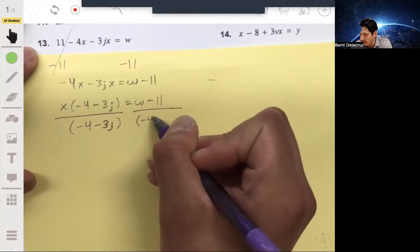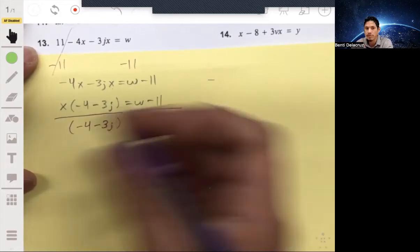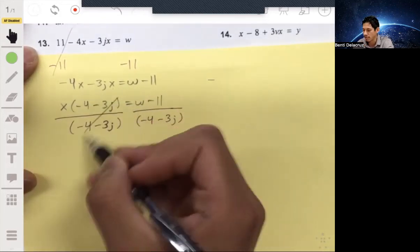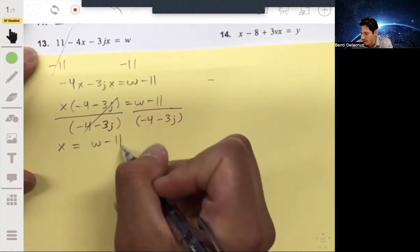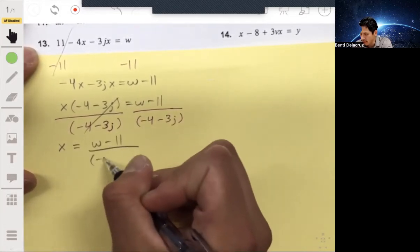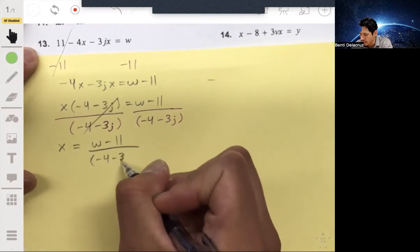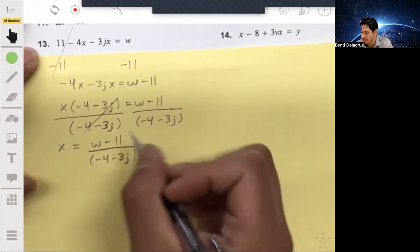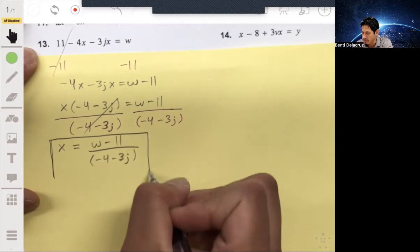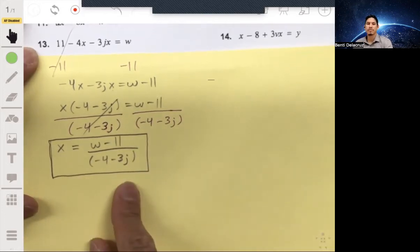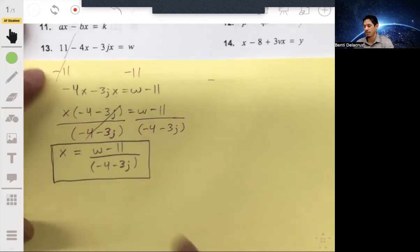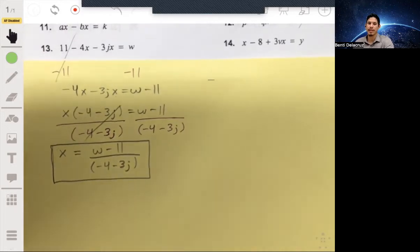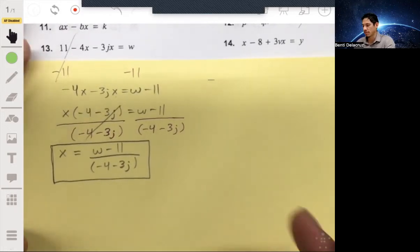All like that, minus 4 minus 3J. This entire group cancels and you're left with X being equal to W minus 11, all over negative 4 minus 3J. And just leave your answer like this. I mean, there are other ways to write this, but it's really not going to be any more useful. So just leave it like this. That way you don't have to worry about making a careless mistake.